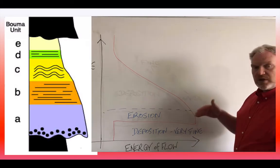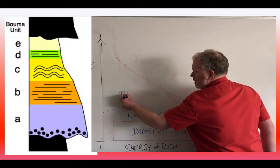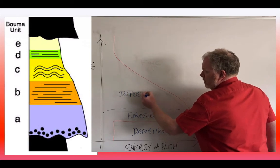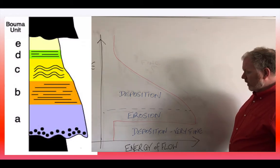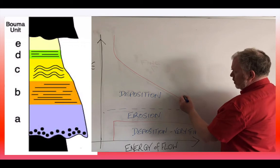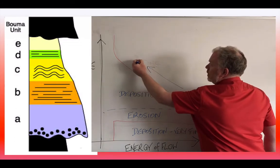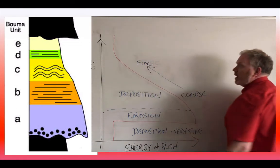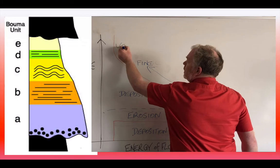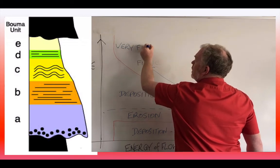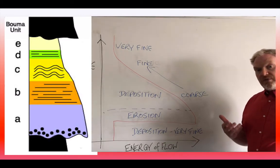As the energy level continues to drop, if we think about how the Hulstrom curve works, we'll enter then a period of deposition. That deposition though, where we have high energy, will be coarse. As that energy drops, it'll become finer, and so we go back to our background deposition, our normal deposition of this very, very fine-grained mud.